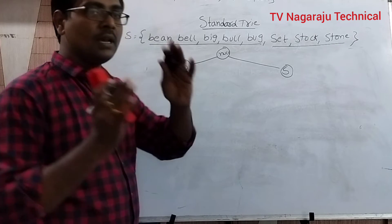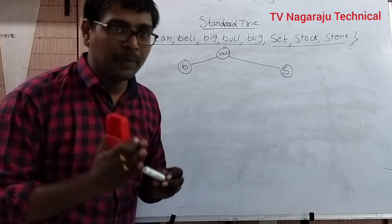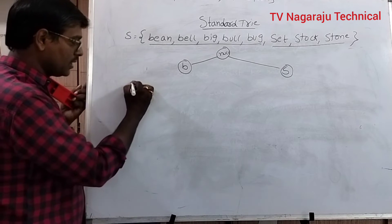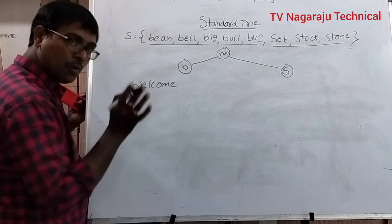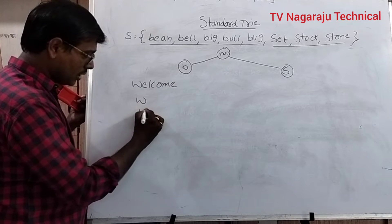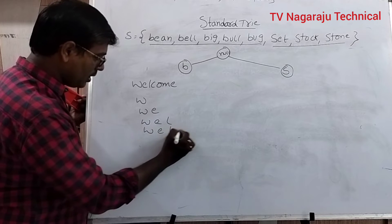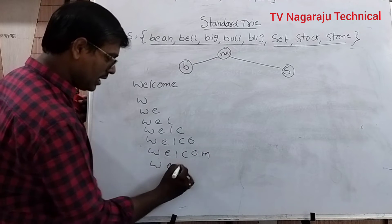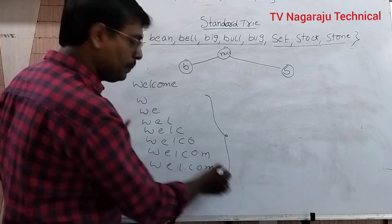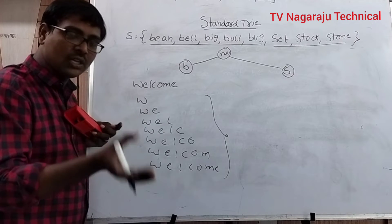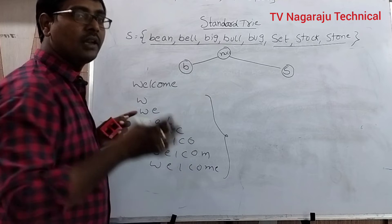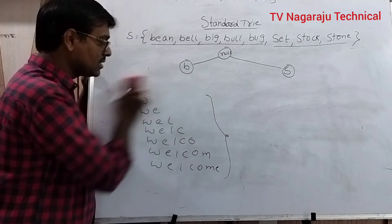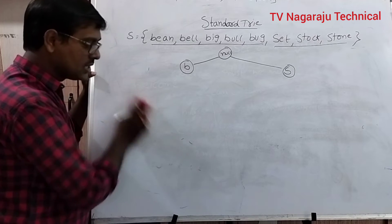The set of strings that have a common prefix share the same ancestor. What is meant by prefix? For example, if my string is 'welcome', the prefixes are W, WE, WEL, WELC, WELCO, WELCOM, and WELCOME — all of these are prefixes. If any two strings have a common prefix, there is no need to write that part of the tree again. The strings with the same prefix share the same ancestor, which is the reason we can represent many strings in a simple path.